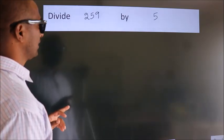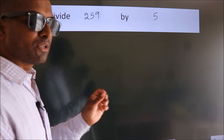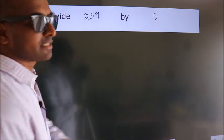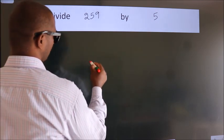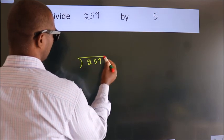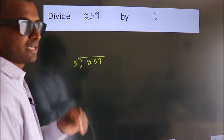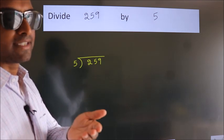Divide 259 by 5. To do this division, we should frame it in this way: 259 here, 5 here. This is your step 1. Next.